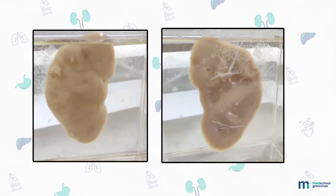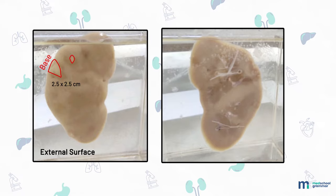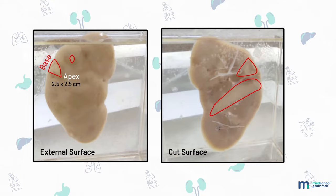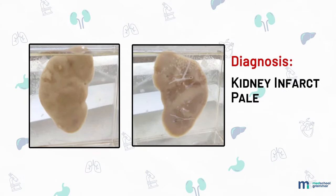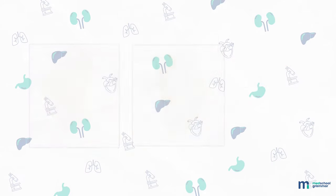Specimen of kidney, 15 by 7 by 1 centimeter. External surface shows two pale wedge-shaped areas measuring 2.5 by 2.5 centimeter, with base towards capsule and apex pointing inside, surrounded by a zone of hyperemia. Cut surface: corticomedullary differentiation is lost, similar wedge-shaped areas seen, also areas of hemorrhage seen. Diagnosis: kidney infarct — pale.